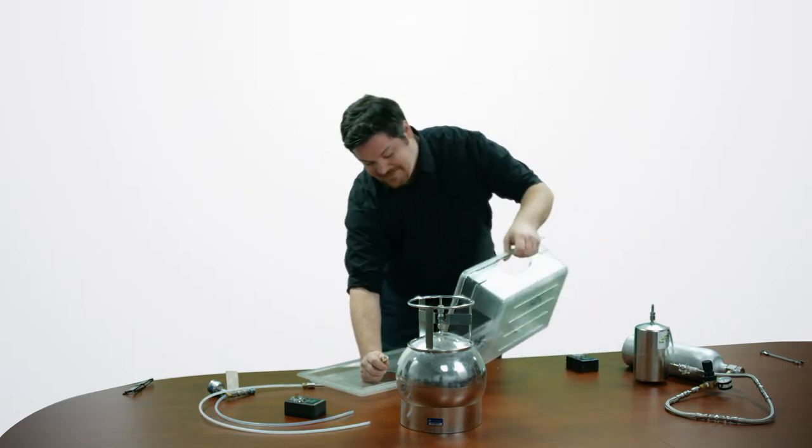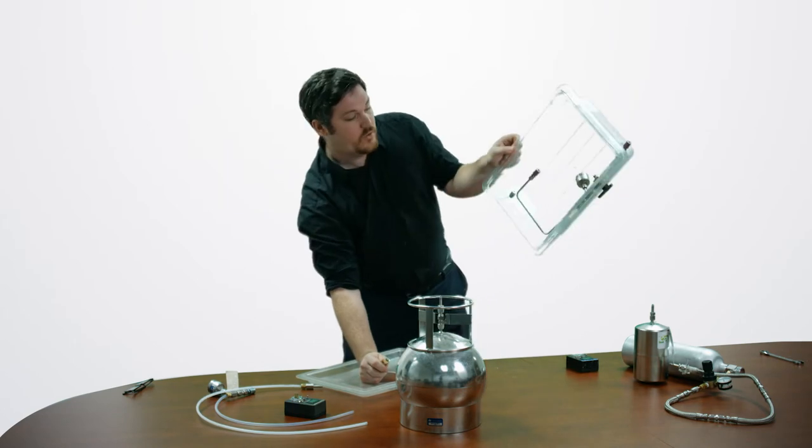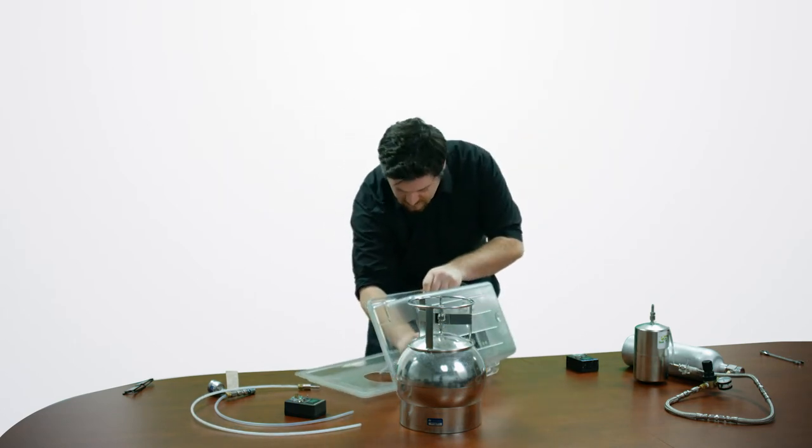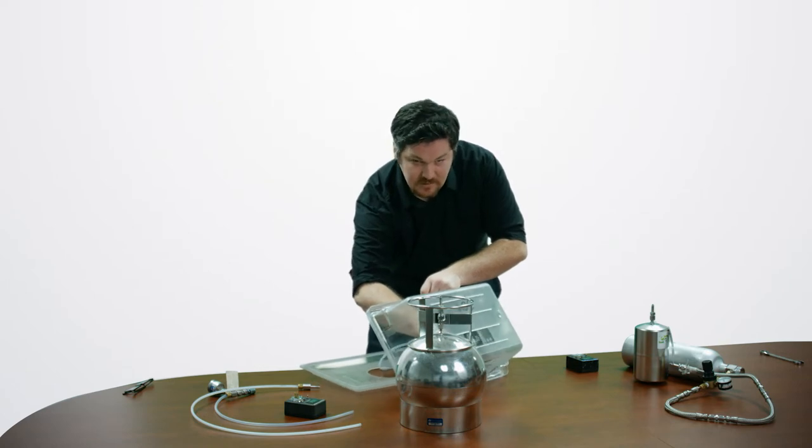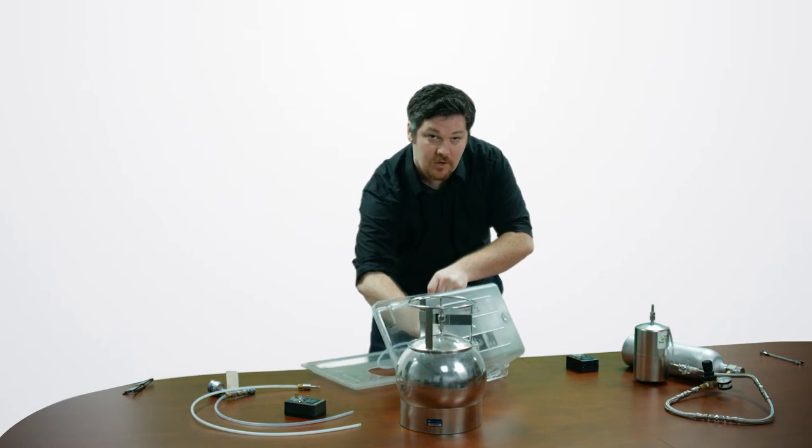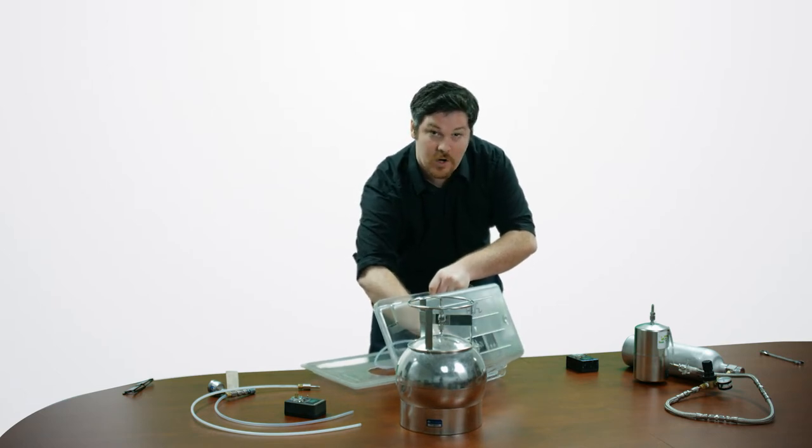We're then going to affix that to our flow controller within the shroud. Once we do this, you really only need to make it about hand tight, and then when in the field, go ahead and use a wrench and give it just a quarter turn.